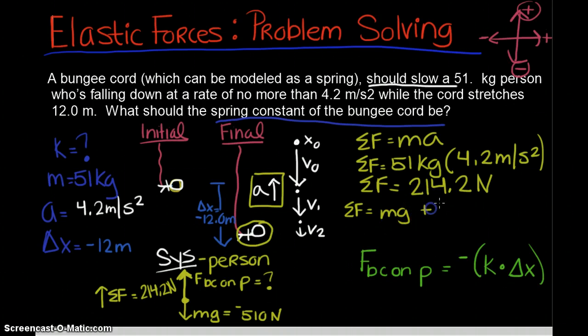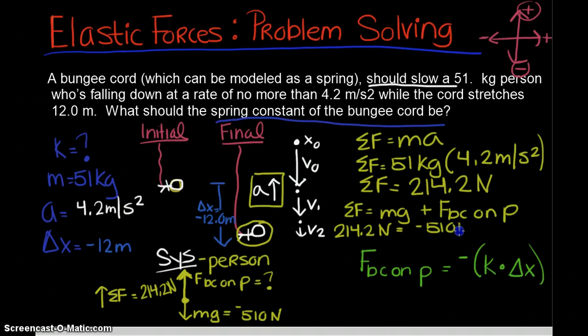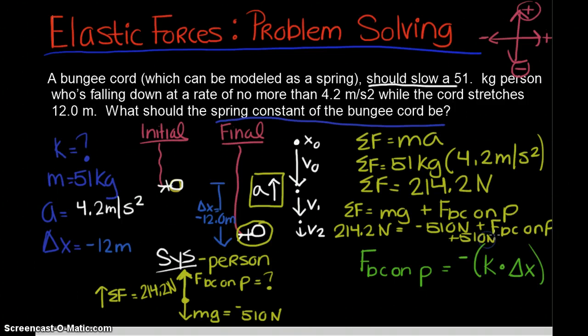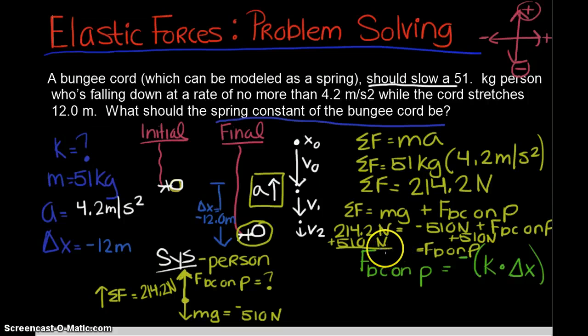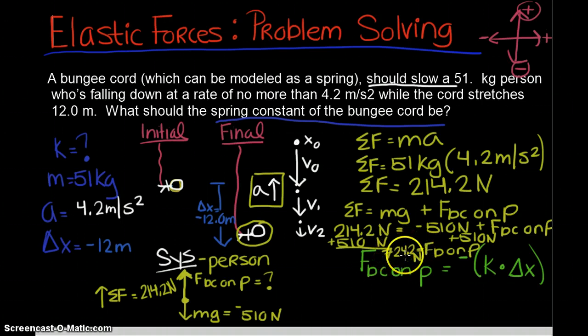Now I can fill this in. Net force, sum of the forces in this case is the weight force plus the force of the bungee cord on the person. Net force we found to be 214.2 newtons, our weight force is negative 510 newtons, plus force of the bungee cord on the person. So if I add 510 newtons to each side, I can find force of the bungee cord on the person. This would be 724.2 newtons as force of the bungee cord on the person.